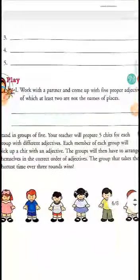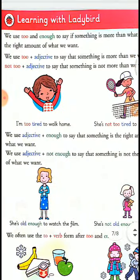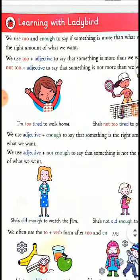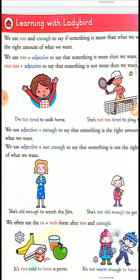Now, moving ahead — Learning with Ladybird. We use 'too' and 'enough' to say if something is more than what we want or the right amount. We use 'too' plus adjective to say something is more than we want, 'not too' plus adjective to say it is not more than we want. We use adjective plus 'enough' to say something is the right amount, and adjective plus 'not enough' to say it is not the right amount. The use of 'not' is very important — one word changes the entire meaning.